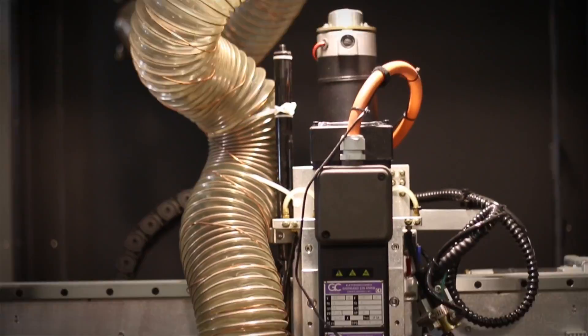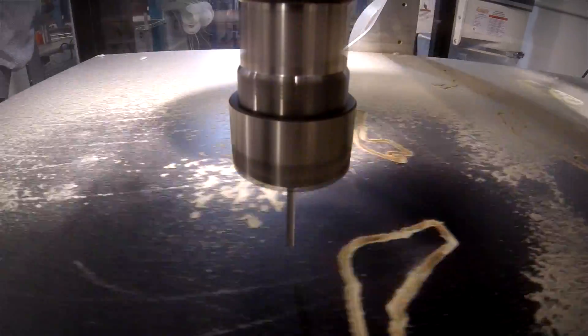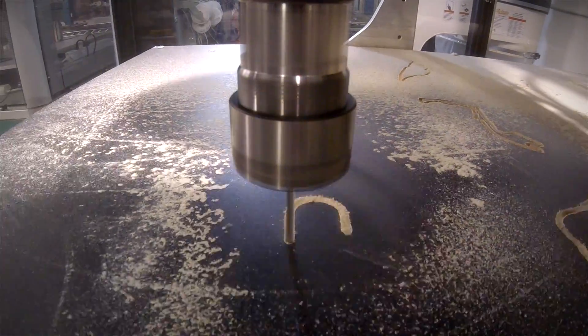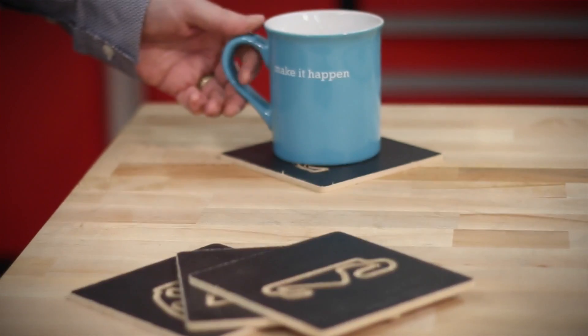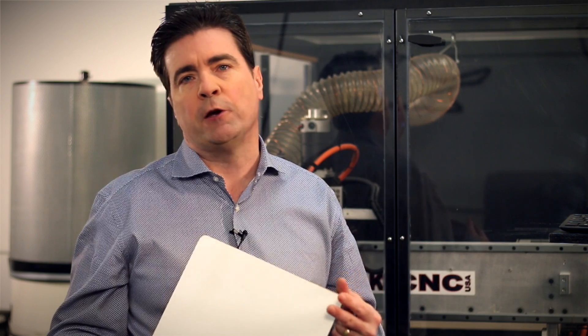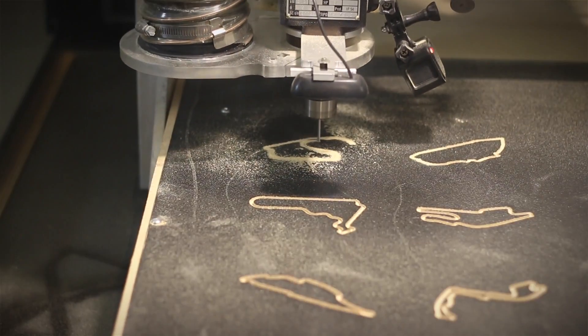So this machine behind me is a CNC router. It's a computer controlled cutter that allows you to cut complex shapes into wood, plastic or even metal. And what we're going to do today is we're going to cut the coasters that we showed you in our previous videos, we're going to cut them out on this machine.